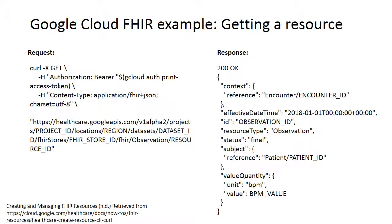Here is a concrete example of how to get a resource from the cloud. We are assuming we have hosted some dataset in the cloud. The left part shows the request you need to send — curl can be used to send a RESTful command, like GET here. In the request itself, we just need to follow this format and fill in our own FHIR store ID or resource ID. When this request is sent to the cloud, we get a response indicating whether the operation is successful, and if it is, we will get a JSON string containing the requested resource — in this case, an observation.